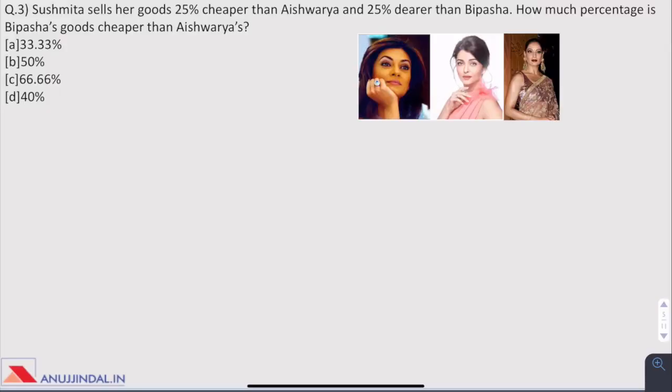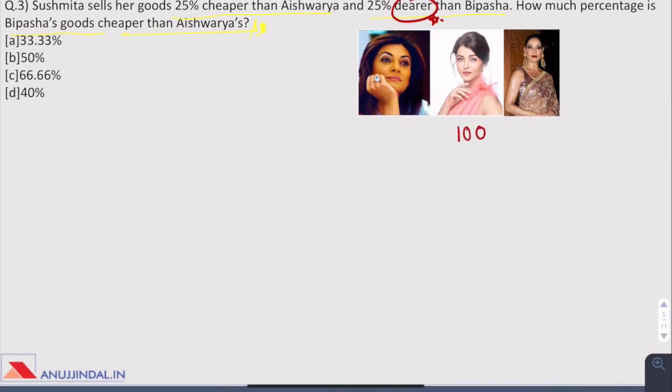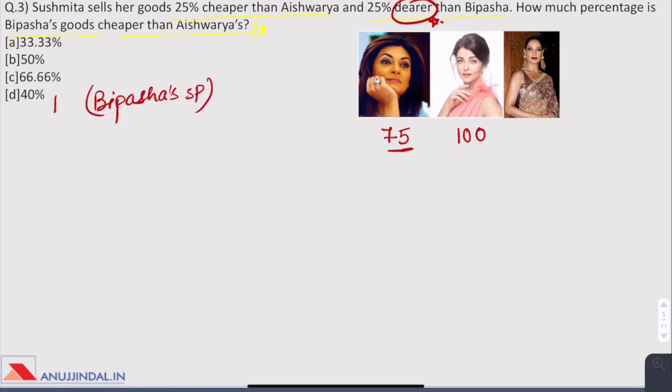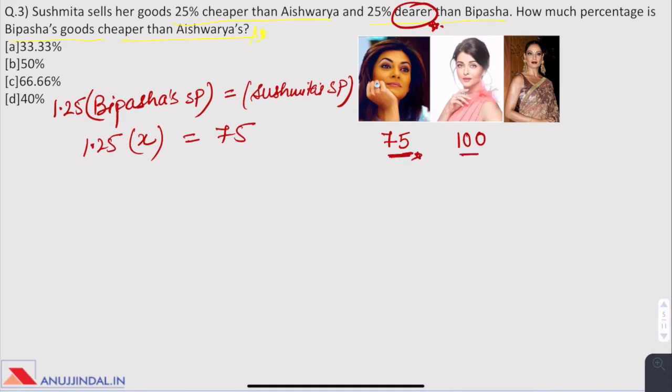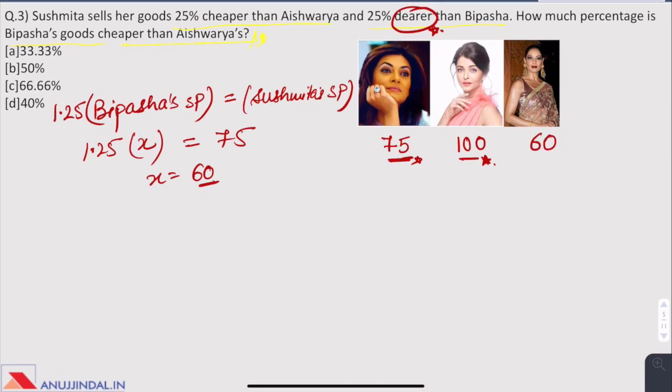Question 3. Shushmita sells her goods 25% cheaper than Aishwarya and 25% dearer than Bipasha. How much percentage is Bipasha's goods cheaper than Aishwarya's? The word dearer means costlier. Let us assume that the SP of Aishwarya be 100 rupees. Then the SP of Shushmita would be 75 rupees as she sells 25% cheaper. It is said that Shushmita's SP is 25% dearer than Bipasha. So Bipasha's SP into 1.25 times equals Shushmita's SP. X multiplied by 1.25 equals 75. So X equals 60.